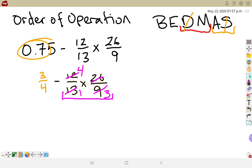And between 13 and 26, I also have a common factor of 13, giving me a 1 left over and a 2. So now I still have my 3 quarters at the front, and now I'm subtracting. 4 times 2 gives me 8 for my numerator, and 1 times 3 is 3 for the denominator.